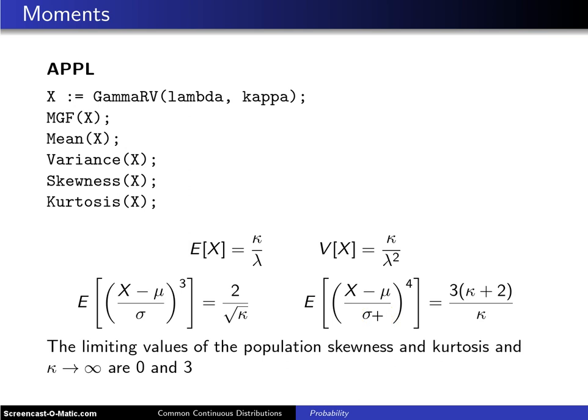Two things to notice. First of all, when kappa is equal to 1, you know that the gamma collapses to the exponential distribution, and not surprisingly, you get 1 over lambda, 1 over lambda squared, 2, and 9 as your first four moments. No surprises there.